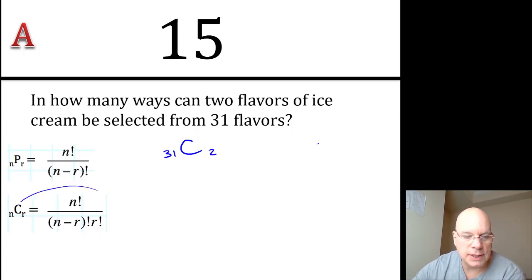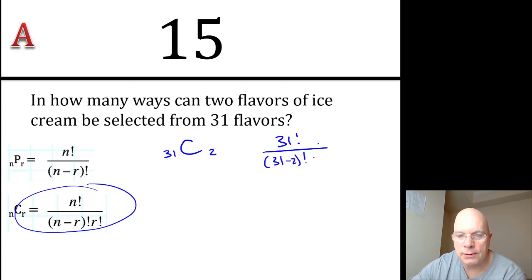Substituting into the combination formula, we get 31 factorial over (31 minus 2) factorial times 2 factorial, and we know this is going to be 29 factorial, so I'll expand my 31 factorial until I get to 29 factorial.